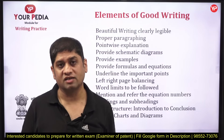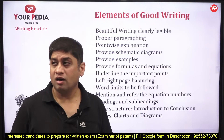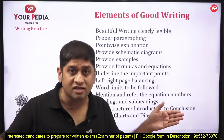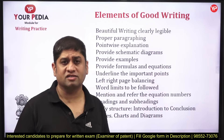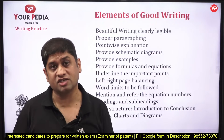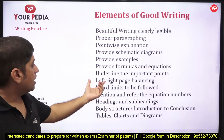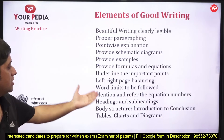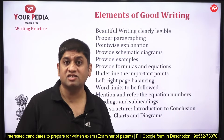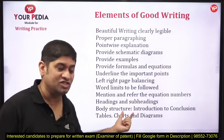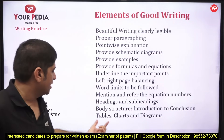The elements of good writing are: first, beautiful legible writing — write so that it can be read and looks good. Second, proper paragraphing — many students don't make it clear where a sentence starts and ends. Third, point-wise explanation — making points is easy for the paper checker to check. Fourth, schematic diagrams. Fifth, examples. Sixth, formulas and equations. Seventh, underlining important points. Eighth, left-right balance. Ninth, following word limits. Tenth, numbering equations and referring to them. Eleventh, headings and sub-headings. Twelfth, body structure — introduction, body, conclusion.